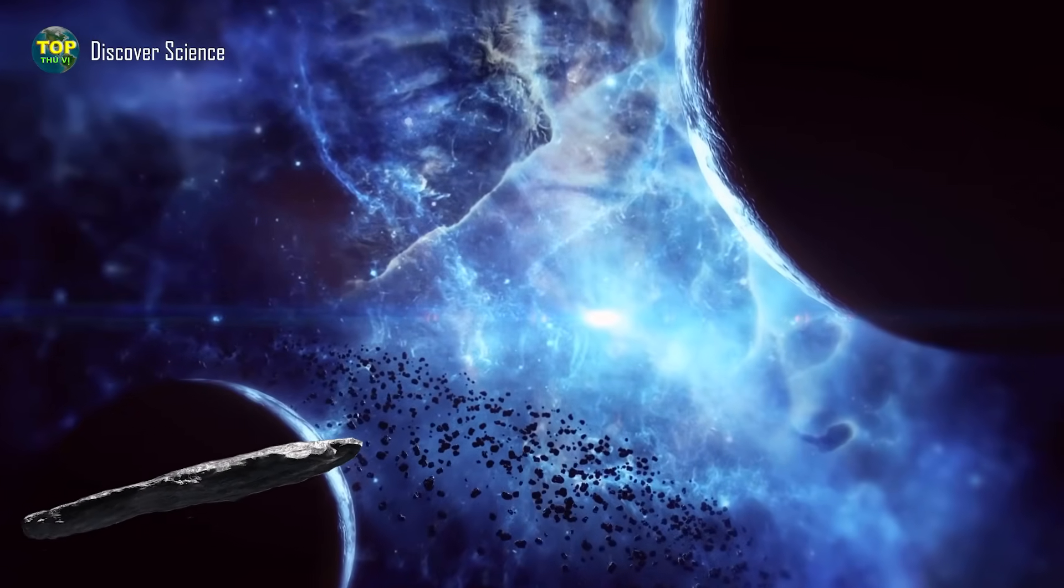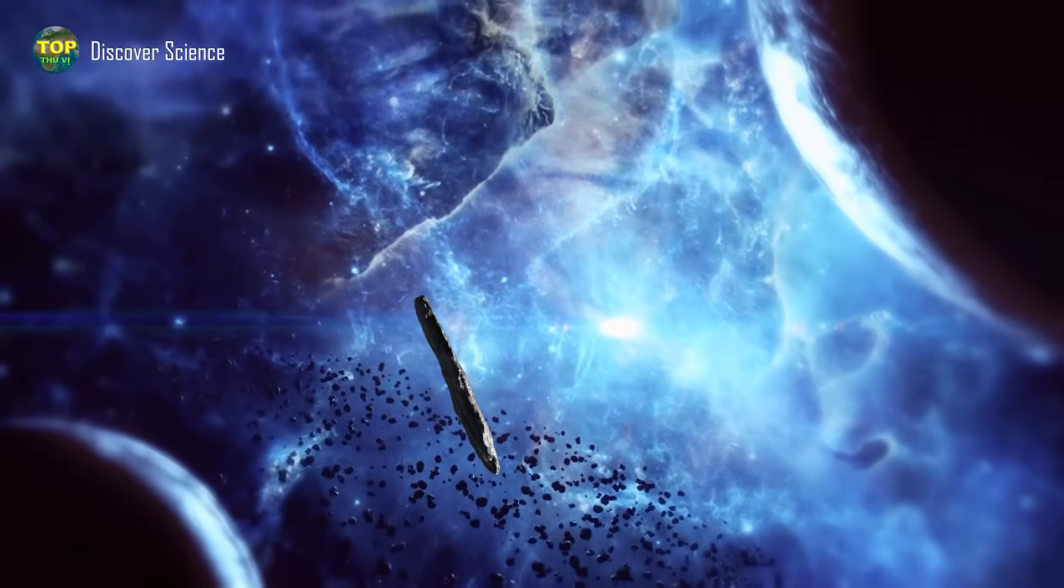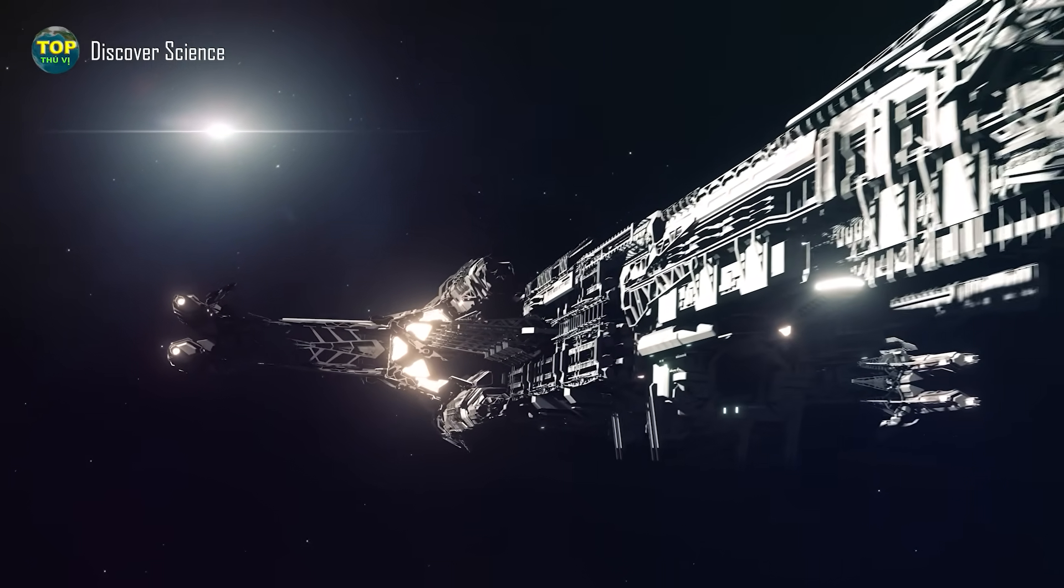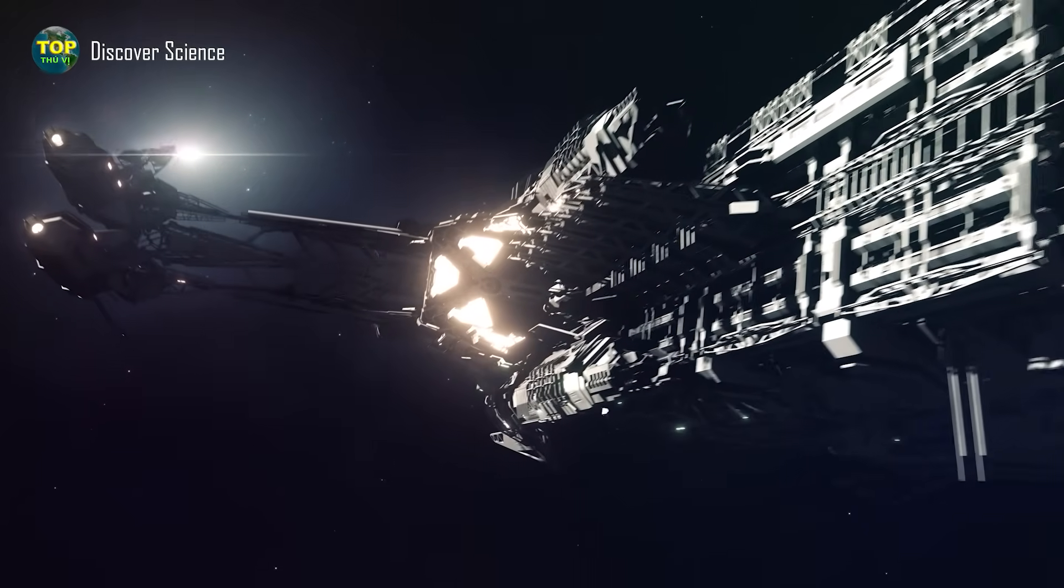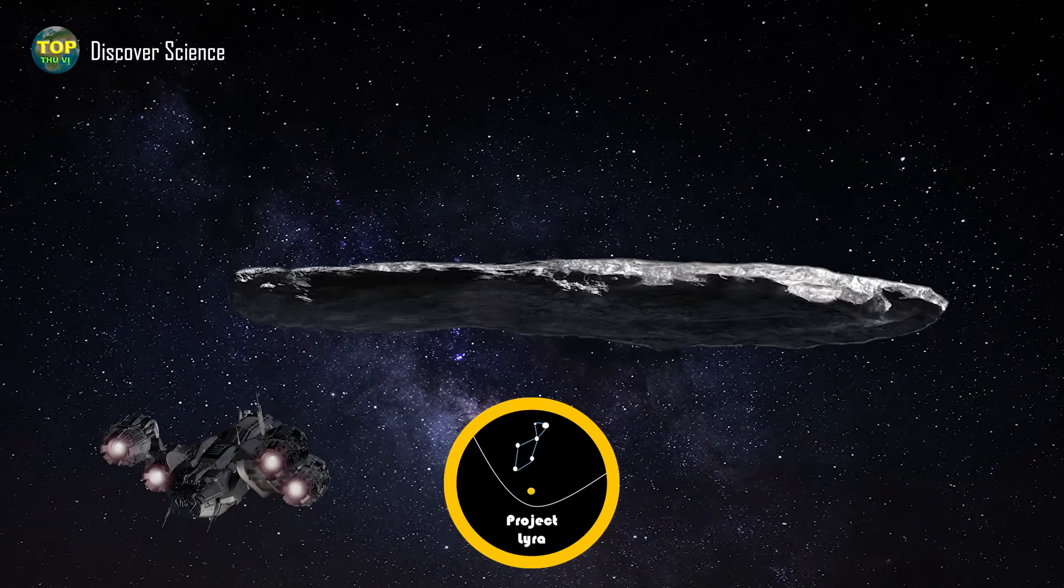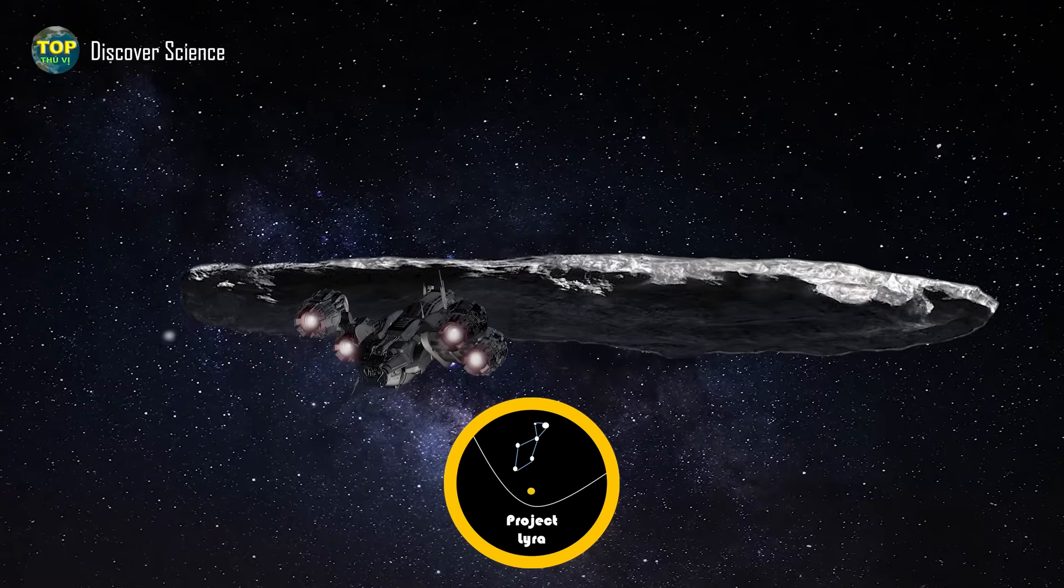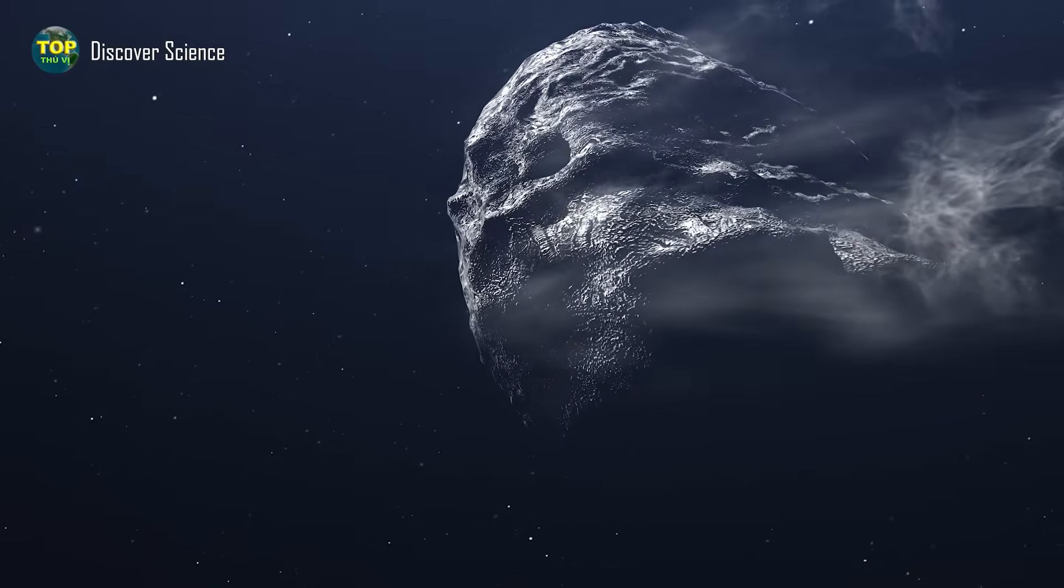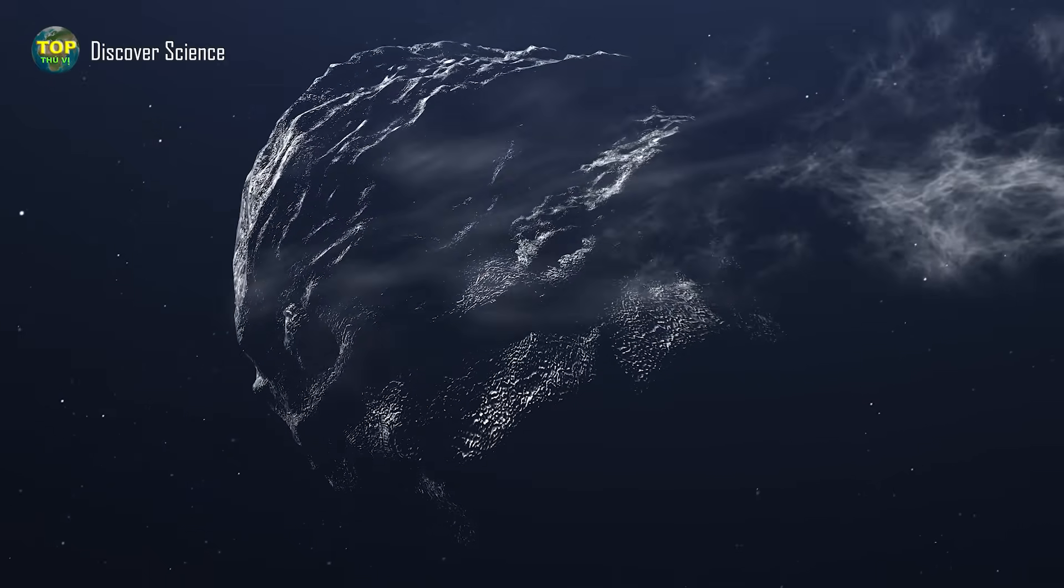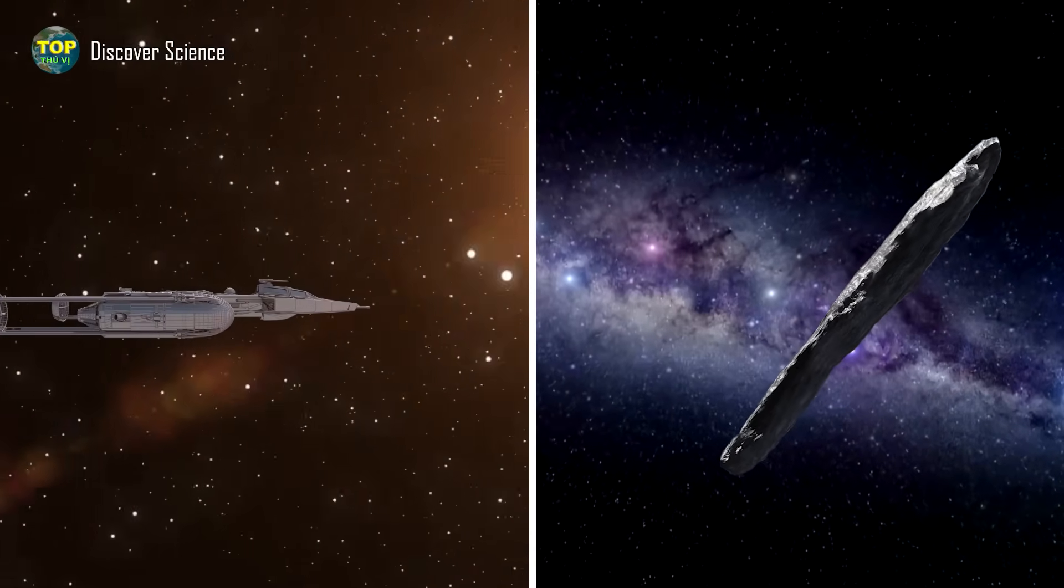Furthermore, as 'Oumuamua moves farther away from the sun, maintaining communication and supplying energy to the spacecraft becomes more difficult. Power, navigation, and communication systems must be designed to function reliably in deep space, billions of kilometers away from us. However, if this mission is successful, it will mark a historic turning point. For the first time, humans would approach an object from another world not belonging to the solar system. We could collect interstellar material samples billions of years old from a completely unfamiliar part of the universe. And most importantly, if there are any signs of artificial structures, unusual designs, or non-natural compounds, it could be the first evidence of extraterrestrial life.